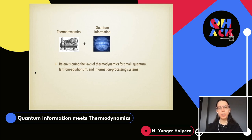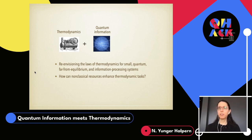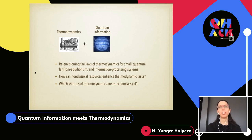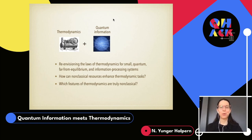We know from quantum information science that quantum phenomena can enhance information processing tasks such as computing. Just as there are information processing tasks, there are thermodynamic tasks — powering systems, cooling systems, and charging batteries. Given that quantum phenomena can enhance information processing tasks, how can they enhance thermodynamic tasks? Finally, we can study quantum systems that exchange energy and other thermodynamic quantities and ask: which of their thermodynamic behaviors will we never see in the classical world? We can start to understand the difference between quantum and classical through thermodynamics.